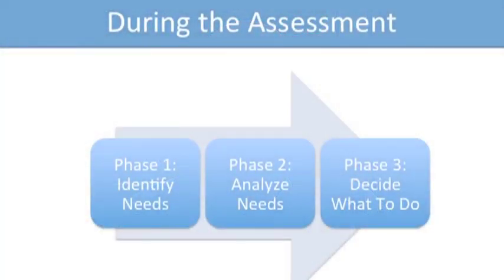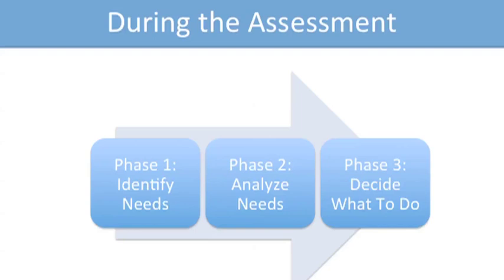We do this typically within three phases of a needs assessment. In the first phase, we identify the needs — we identify those gaps in results. In the second phase, we analyze those needs to see why they're happening. Why are we not getting the results that we wanted to get? If we think back to Juan's example from lecture one, we would want to know why are staff not completing accurately the intake forms of patients? And then in the third phase, we define and decide what should be done in order to close those gaps in results going forward.